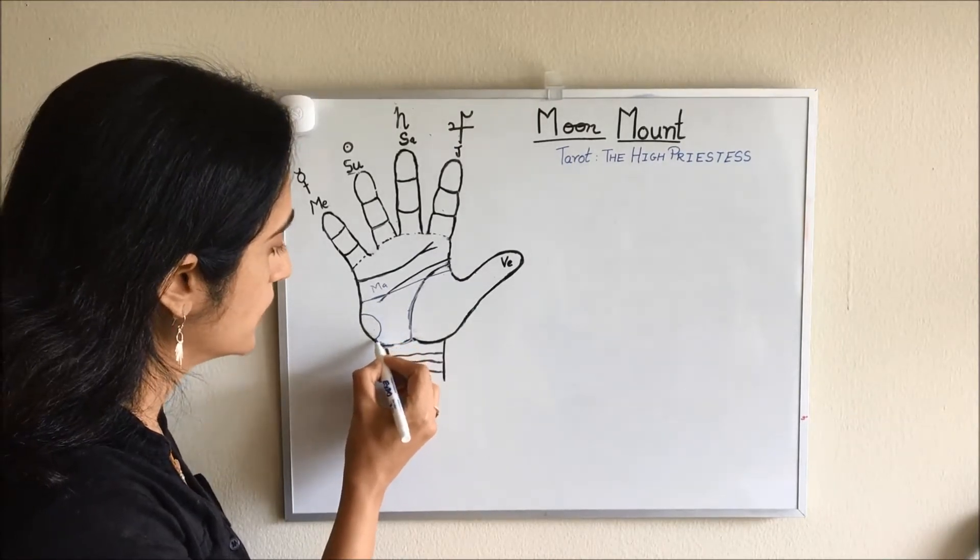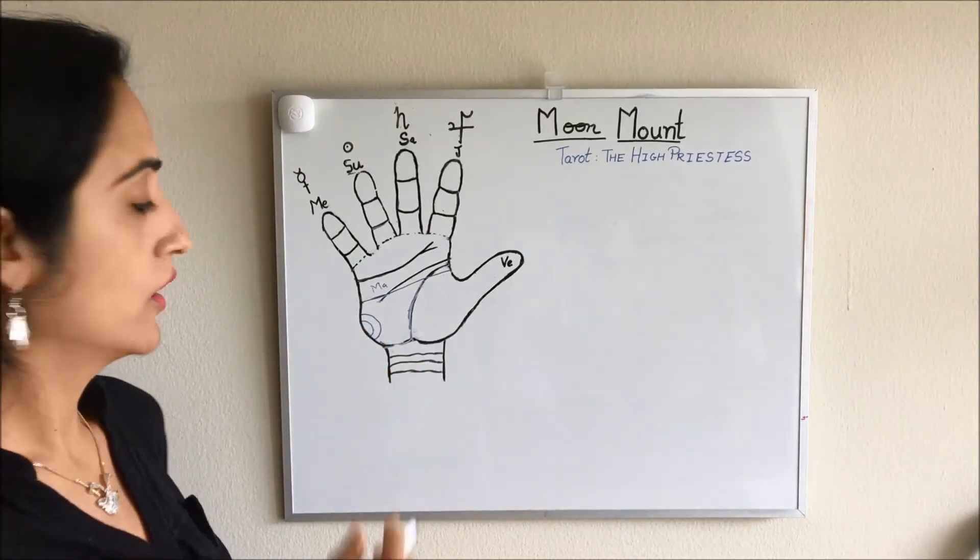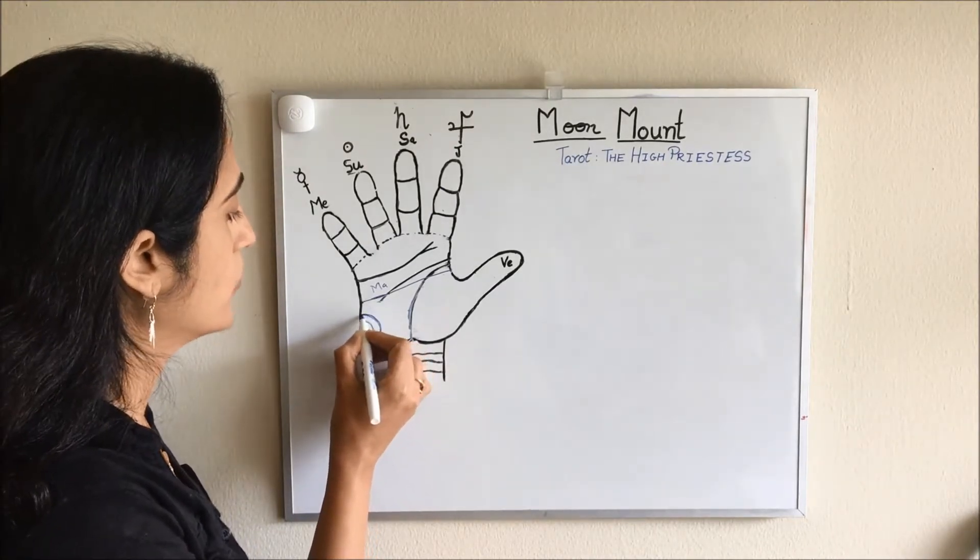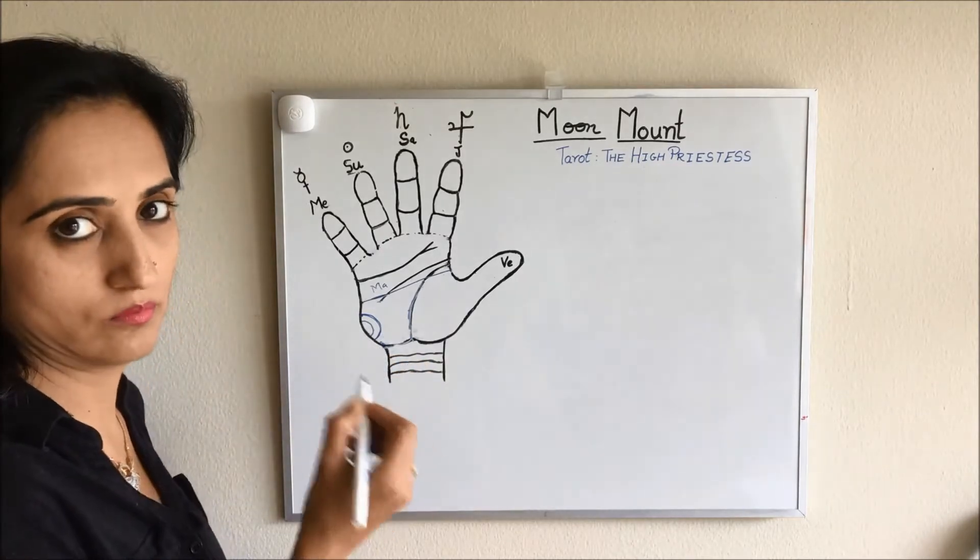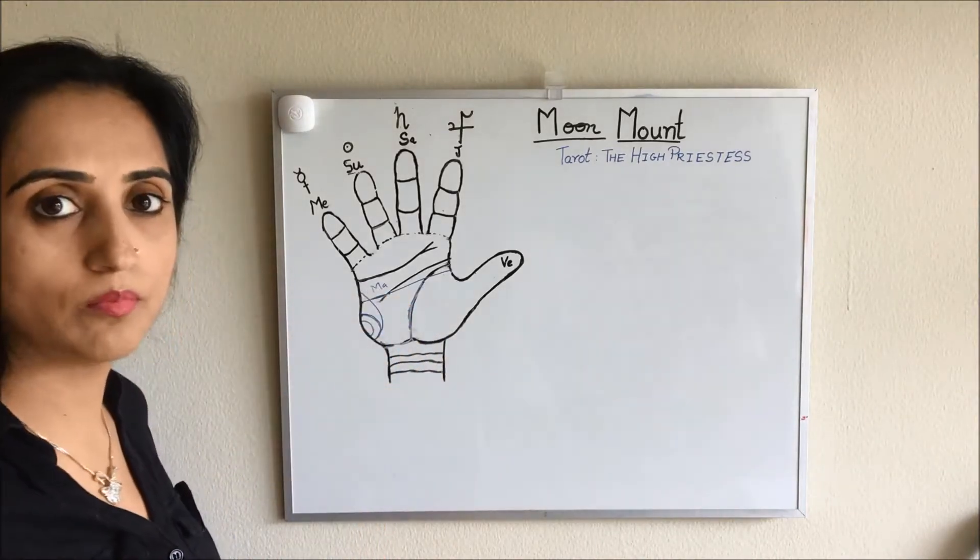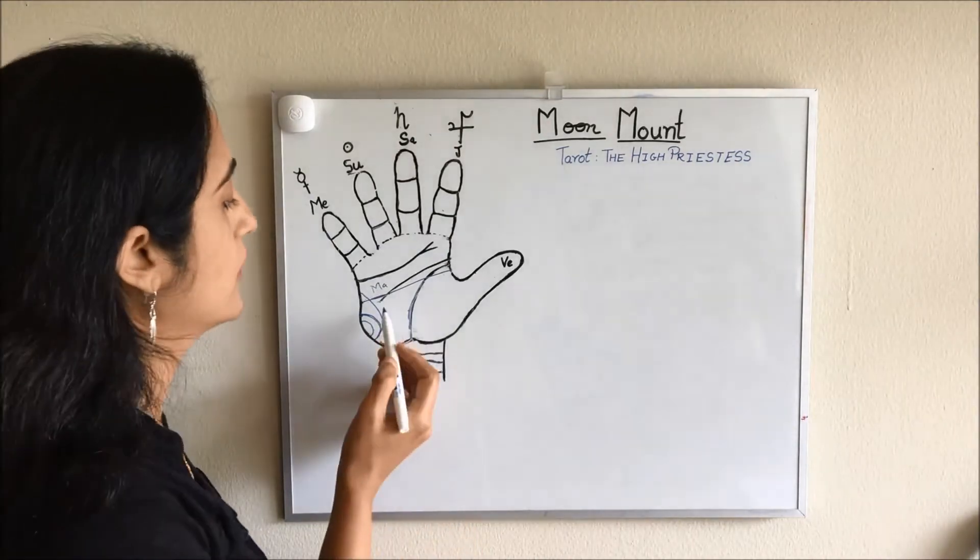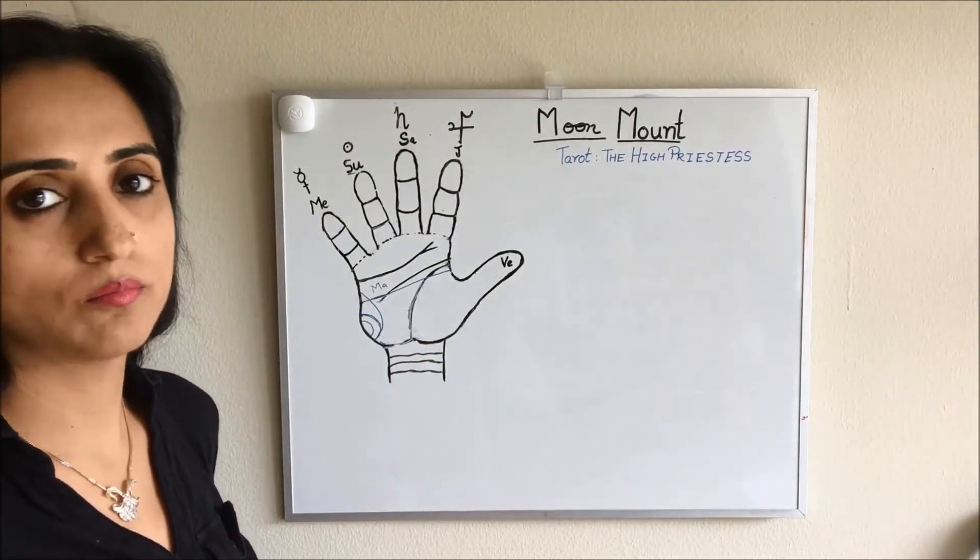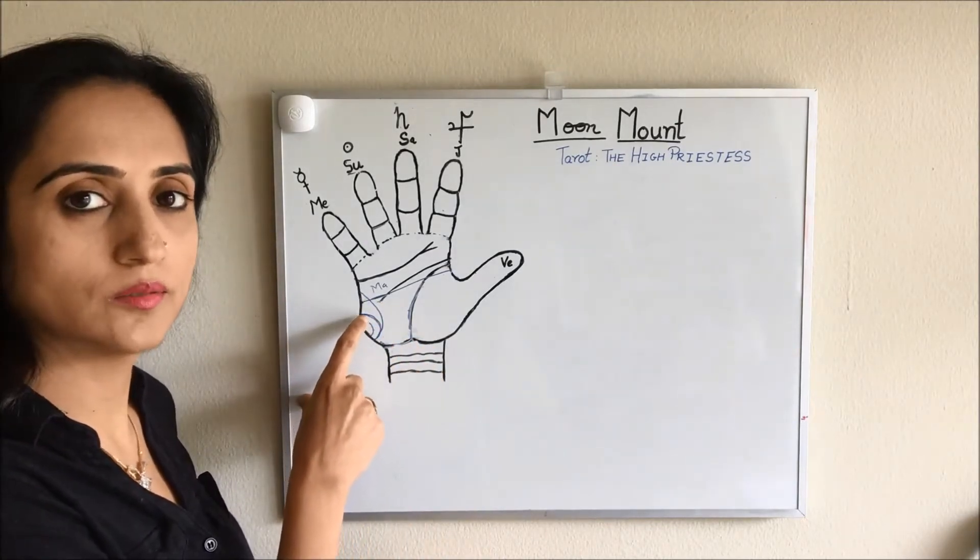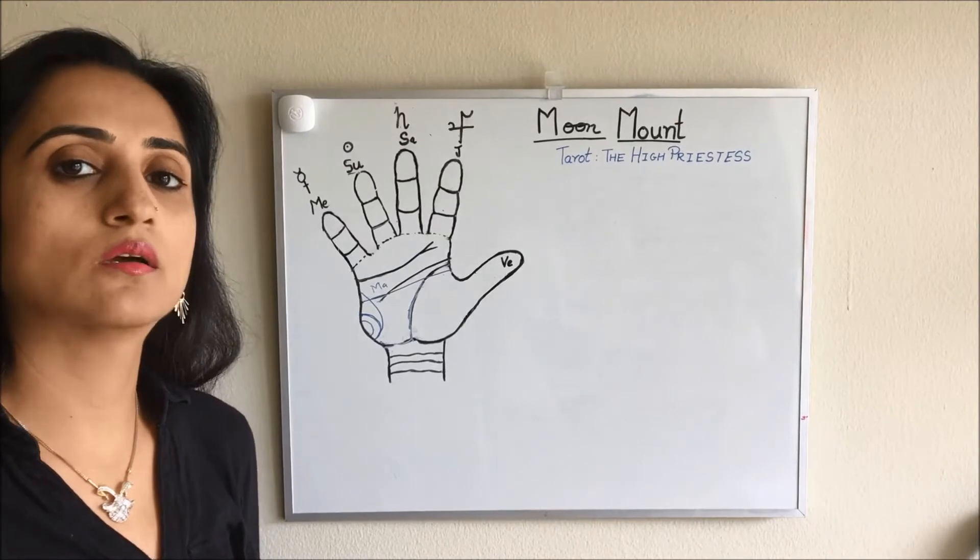In this form or in this one, this is a moon ring. It should start from the moon mount and end at the moon mount. But if it starts at the moon and enters the Mars mount, then this should not be called a moon ring. This we can say as a mercury line. So the moon ring should have boundaries within the moon mount.